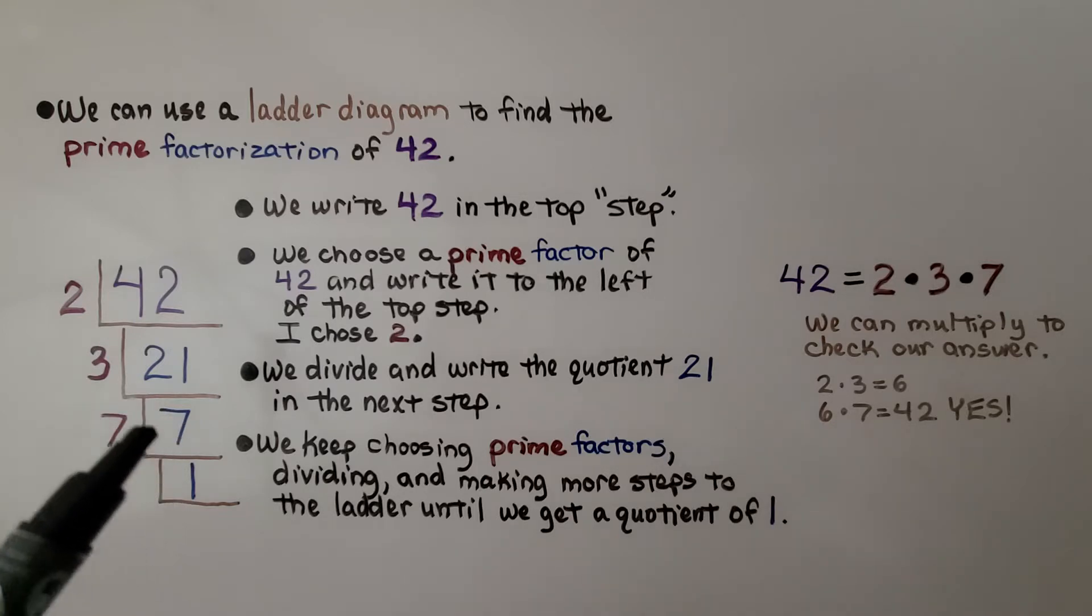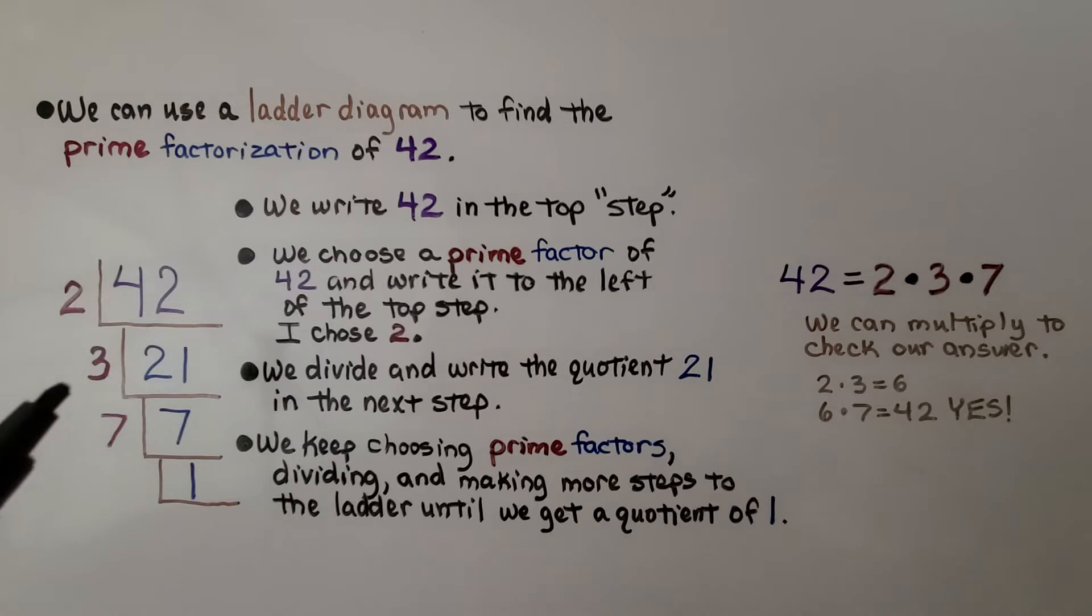What are the factors of 7? 7 and 1. We have 2, 3, and 7 as our prime factors. We keep dividing and making more steps on the ladder until we get a quotient of 1. 7 is a prime number because the only factors it has is 7 and 1. So we know we're finished.